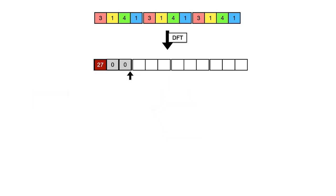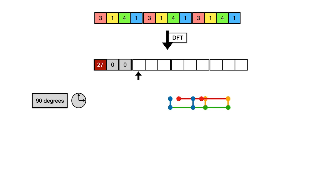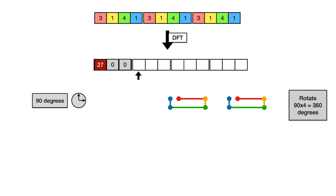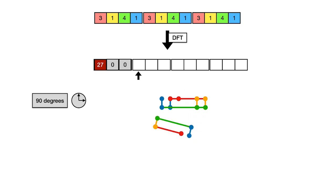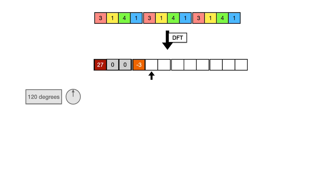Now let's look at why the next one is not zero — at 90 degrees. The first four rods give us a certain shape. The next four rods give something similar, but we have to rotate by 90 times 4 equals 360 degrees, which is like not rotating at all. So we simply concatenate it. We do the same for the last block. We end up three spots to the left — so that's minus 3 — which is the pivot. For 120 degrees, the same triple-rotation argument gives a closing polygon, so that entry is zero.